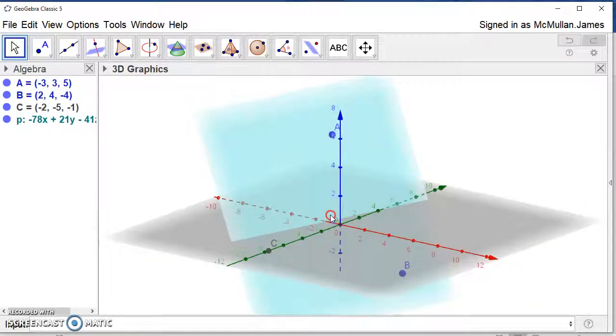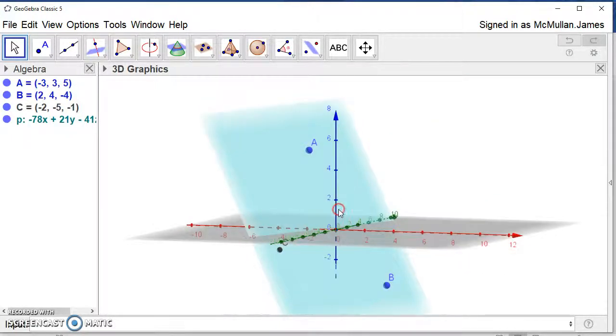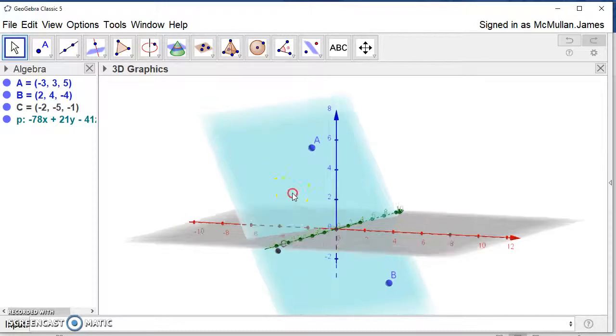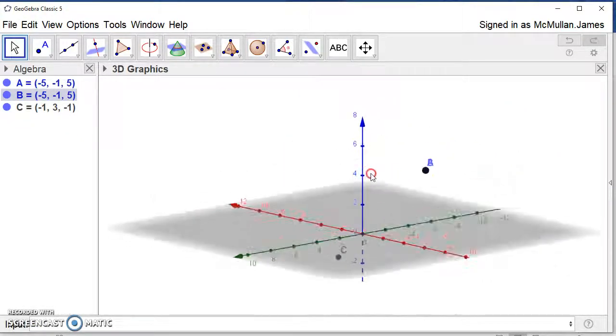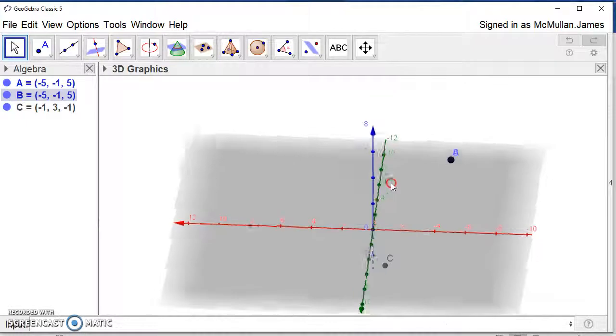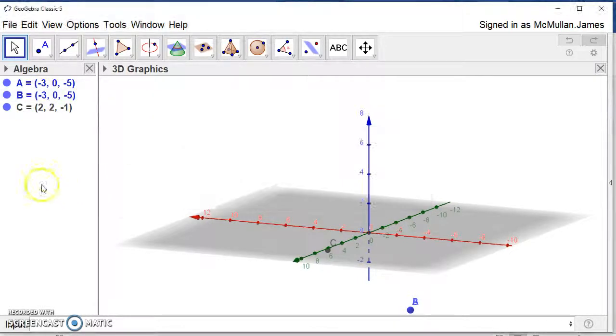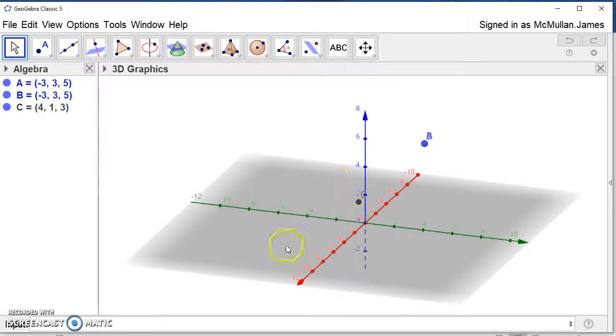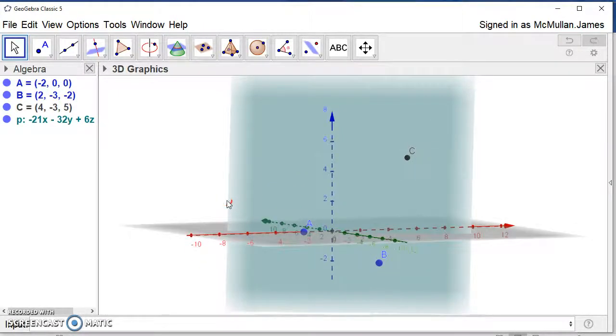Any other plane will miss one of these points. So there are a million planes that contain A and C. There are a million planes that contain A and B. But there's only one that actually contains all three of them. And this is what you should find in your physical demonstration as well. That no matter how you hold these three things, your colleague can always find a way to touch all three and that there's only one way to do that.